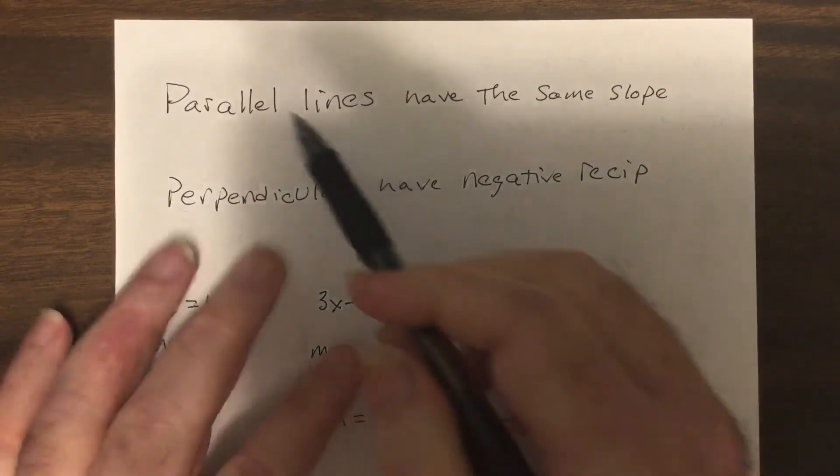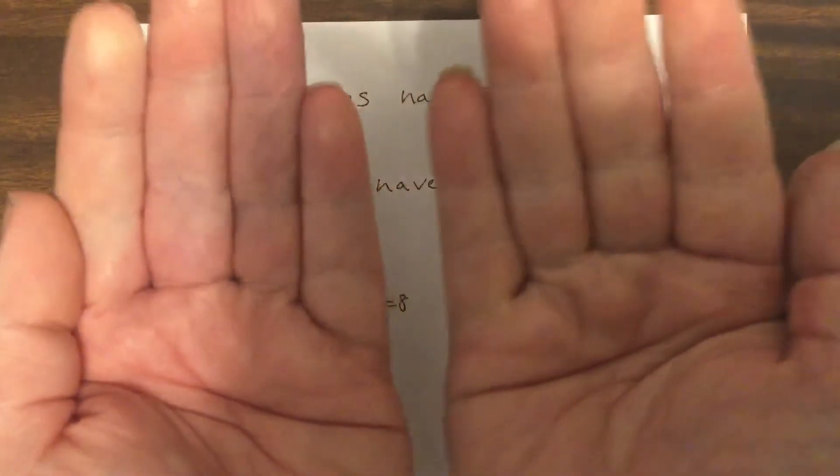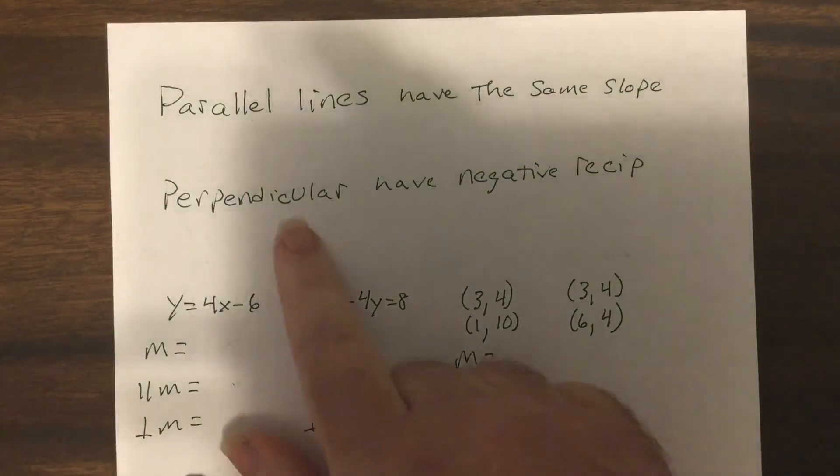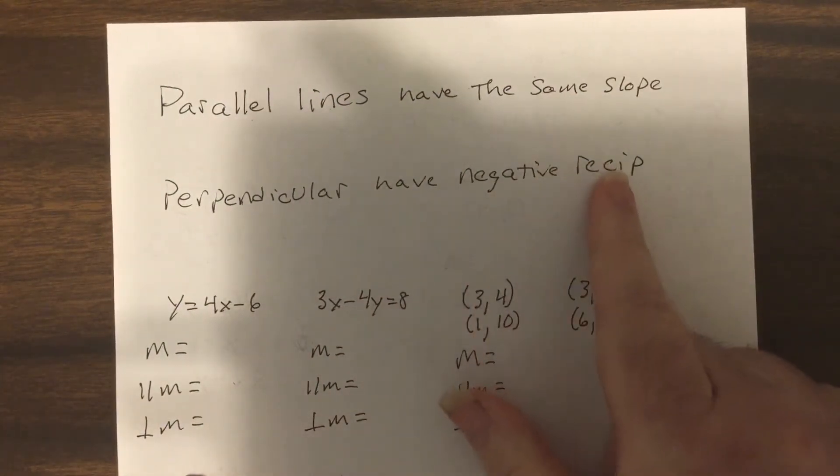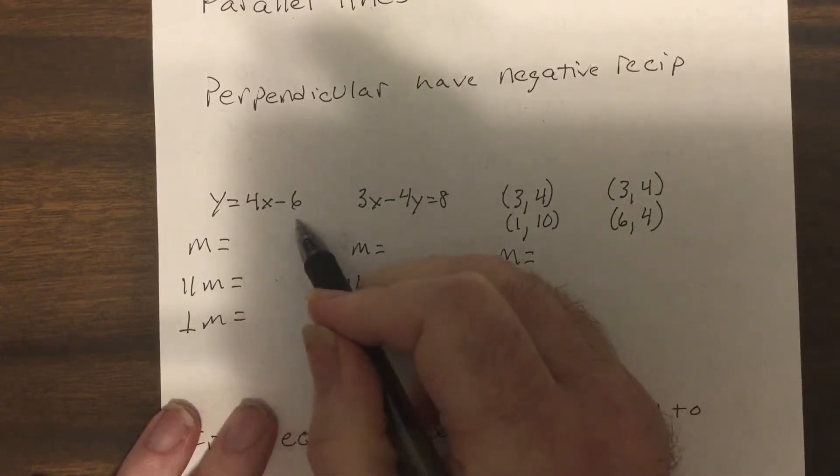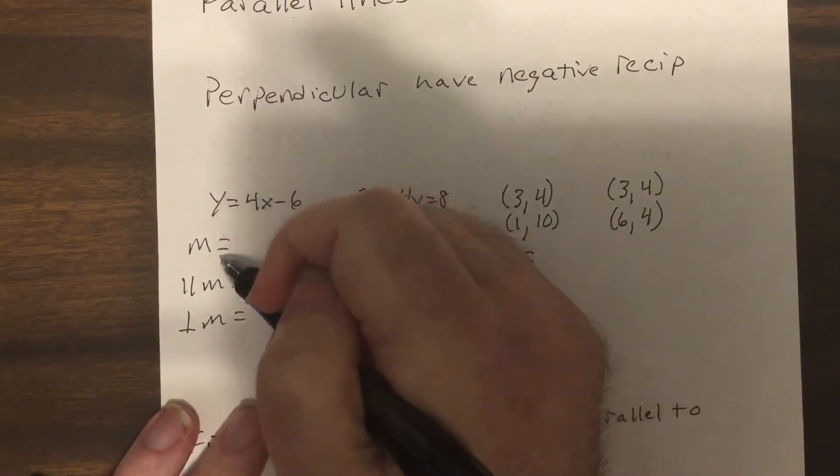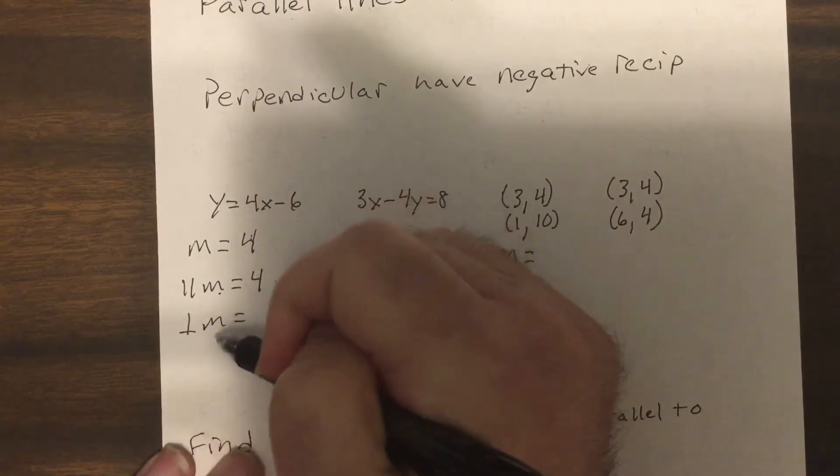Okay, we moved on to parallel lines have the same slope. They're the same. Then perpendicular lines have negative reciprocal slopes. If I have an equation of a line, the slope would be 4, the parallel slope would also have to be 4.